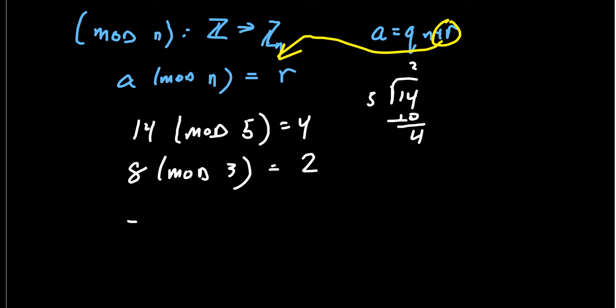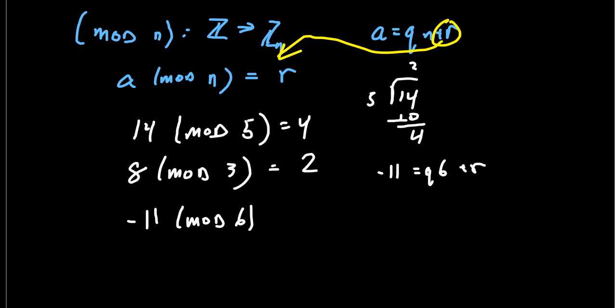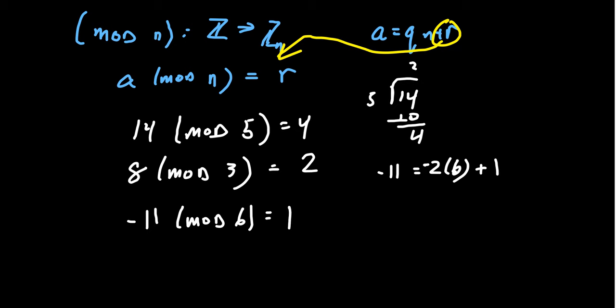For example, negative 11 mod 6: we have negative 11 equals Q times 6 plus R, and we need R between 0 and 5. If we take Q equals negative 2, then negative 2 times 6 is negative 12, and negative 12 plus 1 is negative 11. So negative 11 mod 6 gives positive 1 as the remainder. We can do this operation with negative numbers as well.